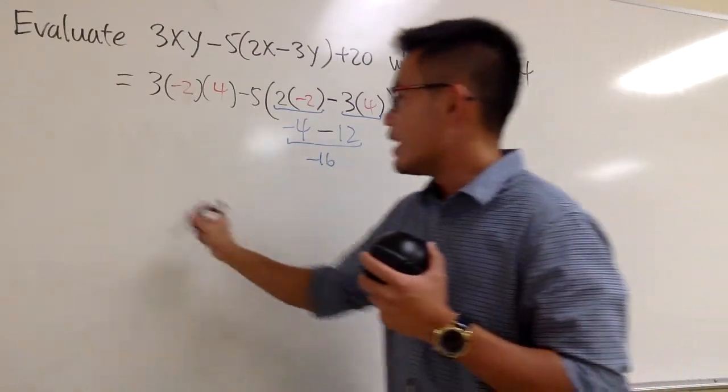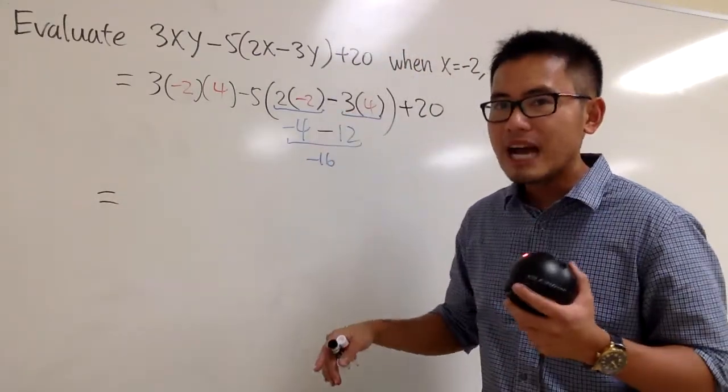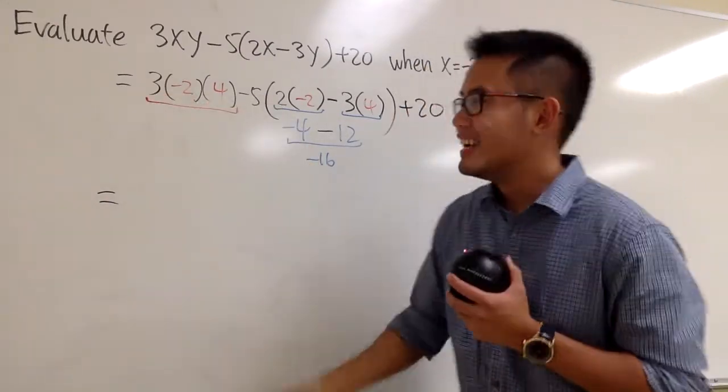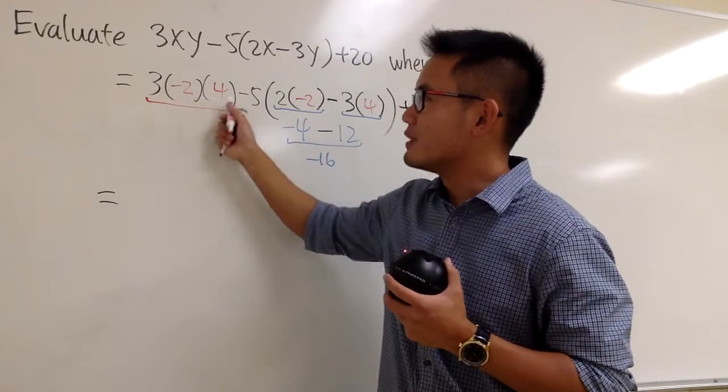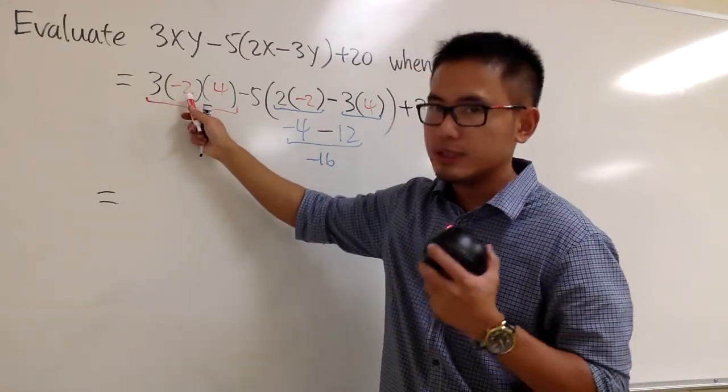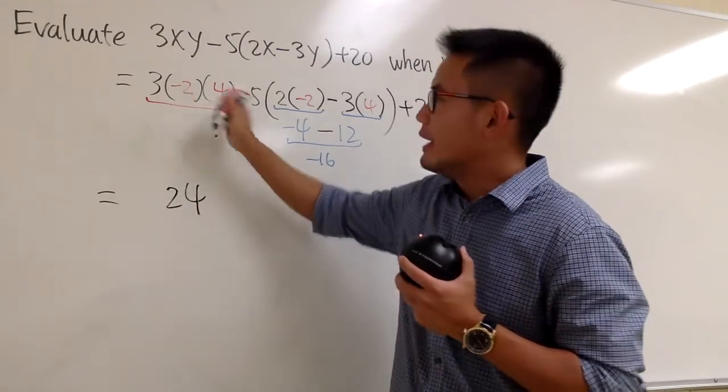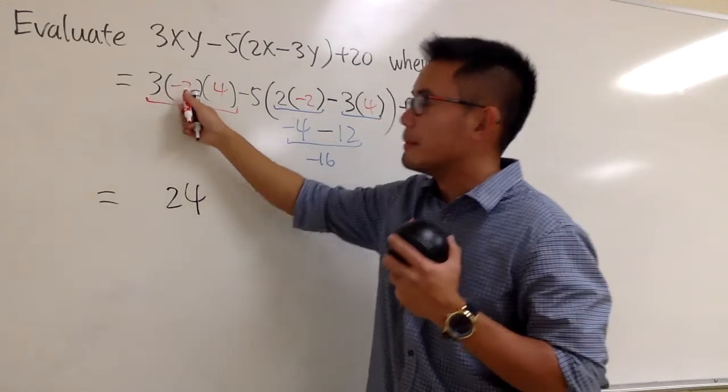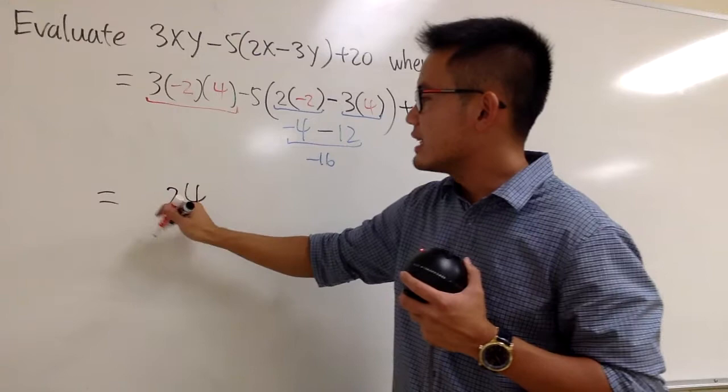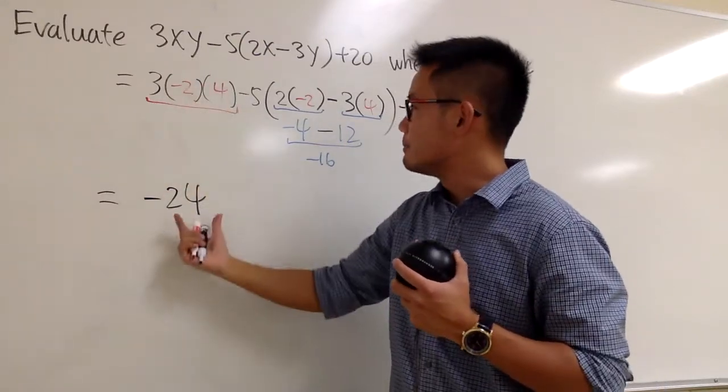And now we did this already, and in the meantime we can actually also work this out. This is how you can do it. Multiply the number first and then do the sign. This is 3 times 2 which is 6. 6 times 4 is going to be 24, isn't it? And this is positive times negative is negative, negative times positive is negative. So altogether we have negative 24 for the first part.